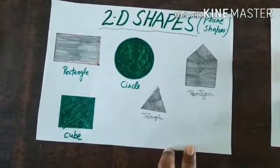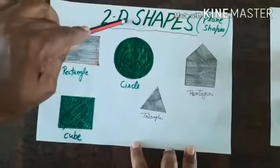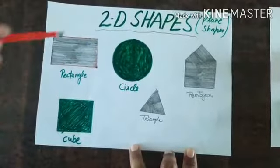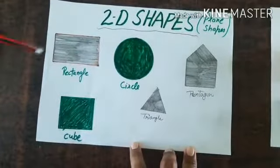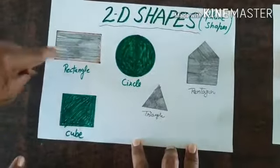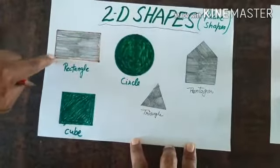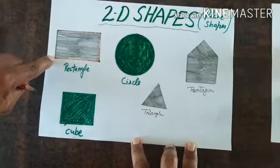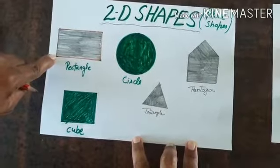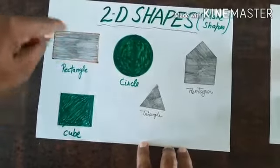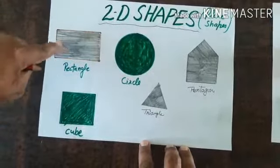2D shapes are made by two dimensions. They occupy only area.